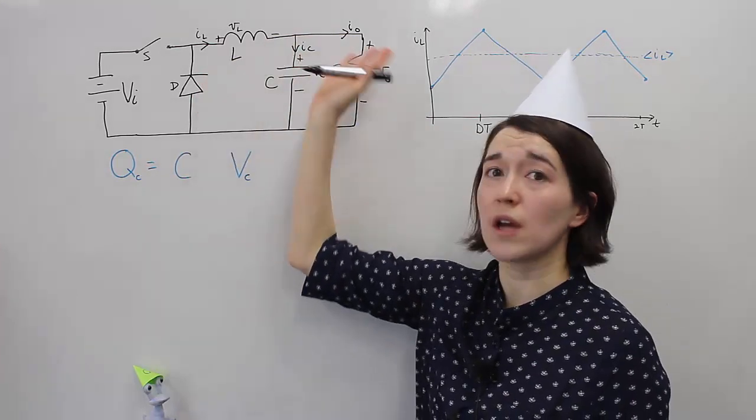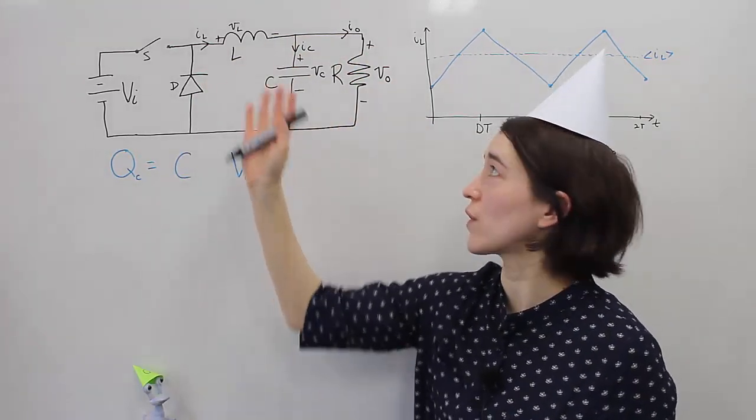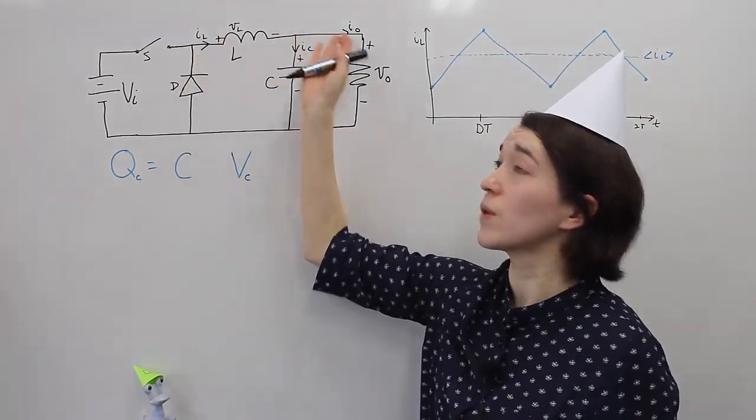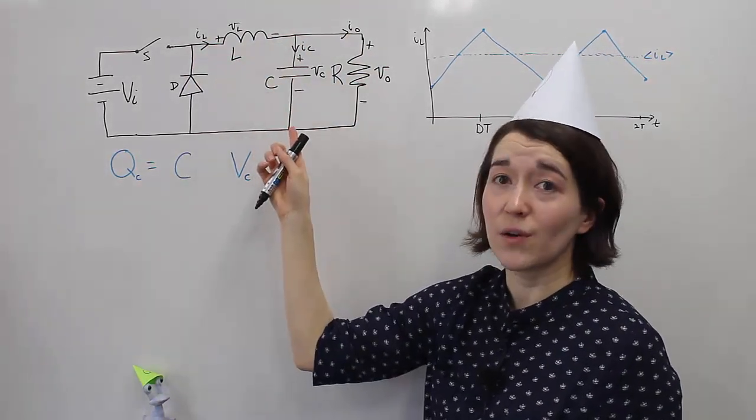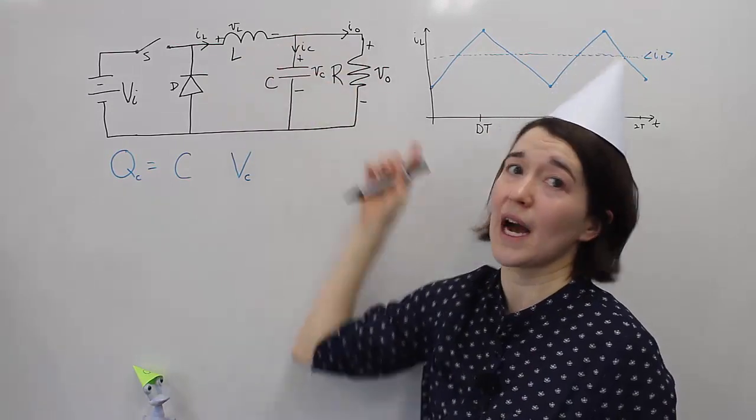That's where the majority of the current, the average current flow will be going through here. But a little bit of current will be going into the capacitor and then coming back out of the capacitor.